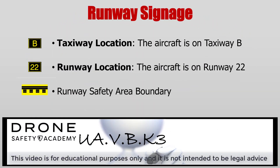With the yellow and black, we have the taxiway location, indicating that the aircraft is on taxiway B. We also have another yellow with black indicating runway location — the aircraft is on runway 22. We also have runway safety area boundary, again in yellow and black.